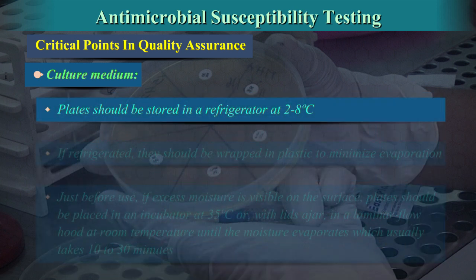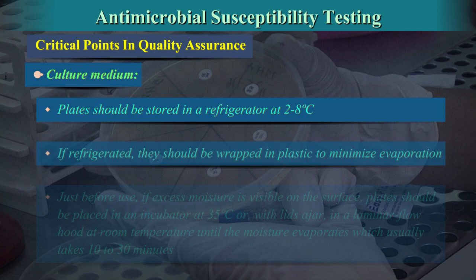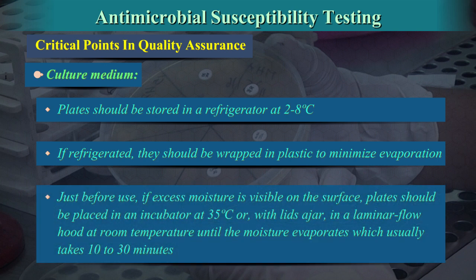Plates should be stored in a refrigerator at 2 to 8 degrees centigrade. If refrigerated, they should be wrapped in plastic to minimize evaporation. Just before use, if excess moisture is visible on the surface, plates should be placed in an incubator at 35 degrees centigrade with lids ajar, or in a laminar flow hood at room temperature, until the moisture evaporates, which usually takes 10 to 30 minutes.